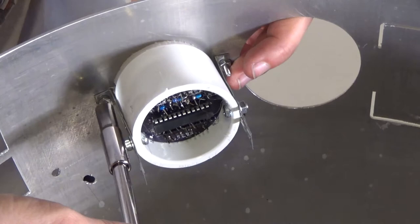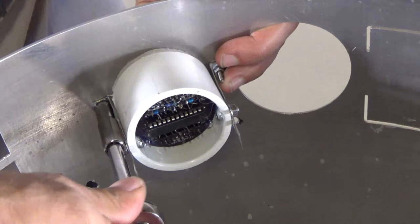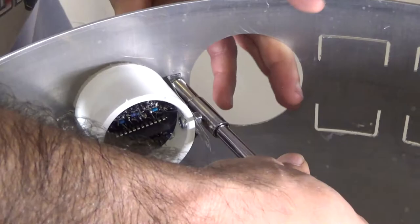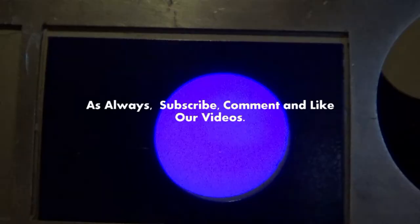Once you've got them all installed, you can use thread locker on there if you choose and just slowly tighten these down until you feel them begin to bite into the metal. Just repeat this process for the rest of your hardware. Drill the holes and put them in.